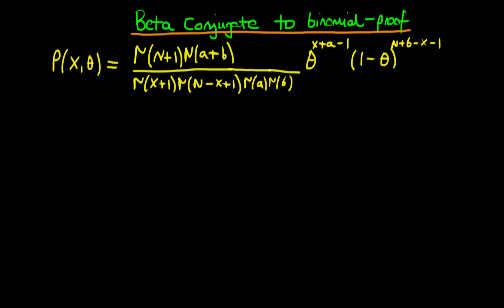In this video we're going to continue our proof that the beta distribution is conjugate to a binomial prior. We're starting off where we left off before, and we derived this expression for the joint distribution of x and theta. We have this nasty term here, times what we spoke about originally, which looks a little bit like a beta distribution in itself.